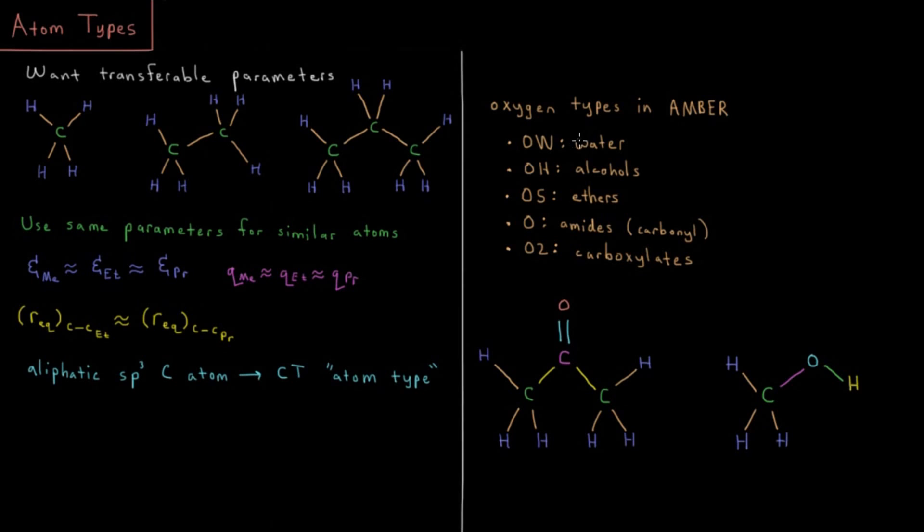We have OW, the oxygen in water, OH, the oxygen in alcohols, OS, oxygen in ethers, O, the oxygen in amides or more specifically carbonyl type situations, and O2, the other oxygen in carboxylates. So you can imagine with this and a small handful of parameters you can probably define a lot of parameters for a wide variety of chemical systems in different types of functional groups.